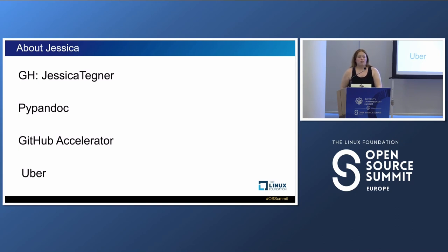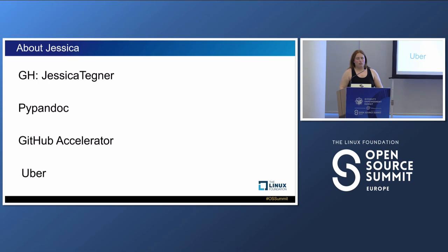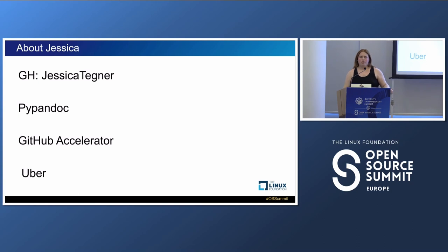I have a project called PyPandoc, which is a pretty popular Python library, and that gave me the opportunity to be part of the GitHub Accelerator program — a program GitHub hosted in the spring to find new ways to make open source more sustainable, more on the financial side. Then this summer I finished a software engineering internship at Uber, where I learned a lot about their systems and how a big tech company integrates open source and works with maintainers and stakeholders.